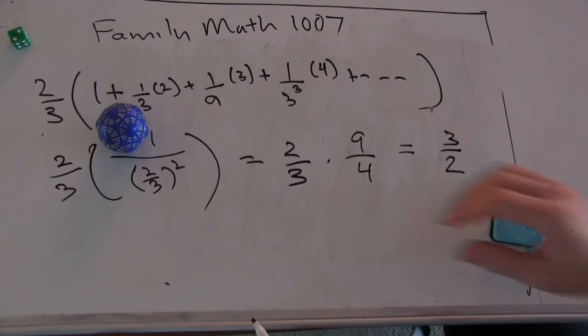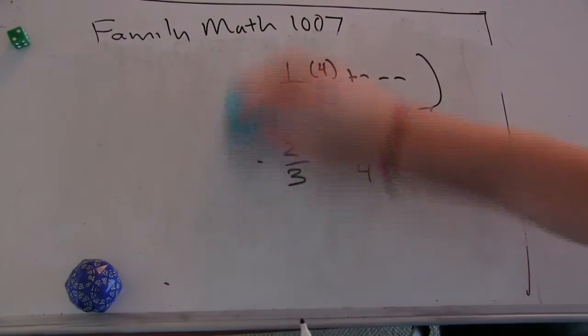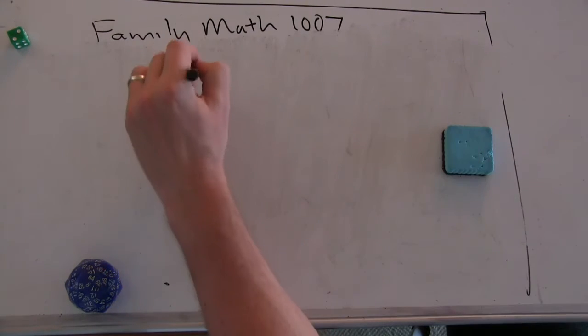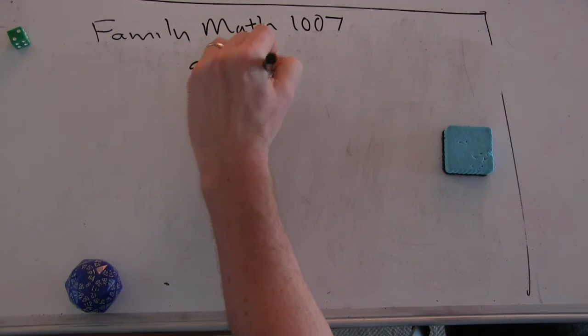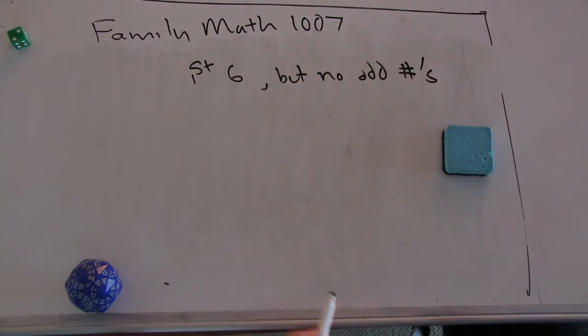So, the same problem. We're going to roll a six, and we want to know the first six, but no odd numbers. Alright.